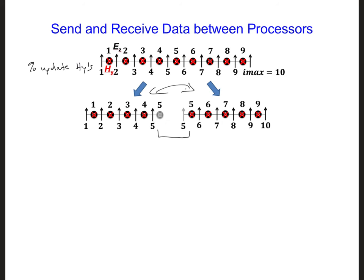we can send the newly updated HY iMax divided by 2 from processor 1 to 0. And then after the EZ fields are updated, we can send the newly updated EZ iMax over 2 from processor 0 to processor 1.